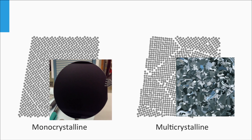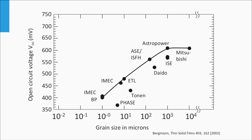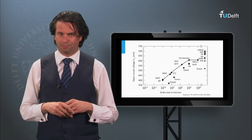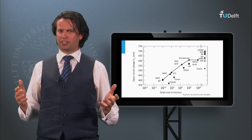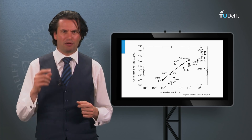Grain size plays a role as well. In a figure from a paper by Bergman, we see the relation between the open-circuit voltage of various solar cells and the average grain size of the multicrystalline silicon absorber layer. The larger the grain size, the longer the charge carrier lifetimes, and therefore the larger the band gap utilization and the larger the open-circuit voltage. On the right, the open-circuit voltages of solar cells based on monocrystalline silicon wafers are shown — since monocrystalline silicon has no grain boundaries, much larger open-circuit voltages can be obtained. The question now is how we make these types of silicon wafers, which will be discussed in the next block.